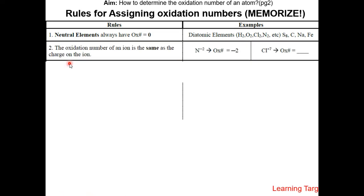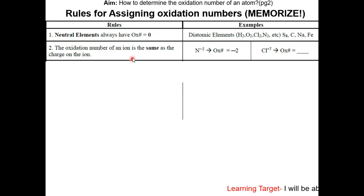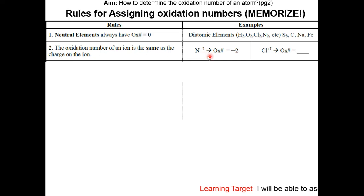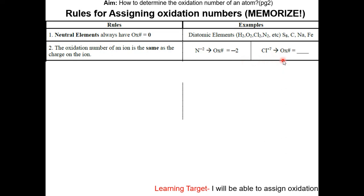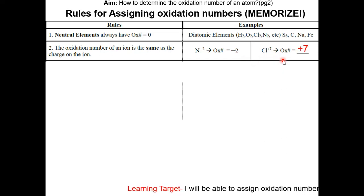Rule two: the oxidation number of an ion is the same as the charge of the ion. For example, N³⁻ has an oxidation number of minus two, and Cl⁷⁺ has an oxidation number of positive seven.